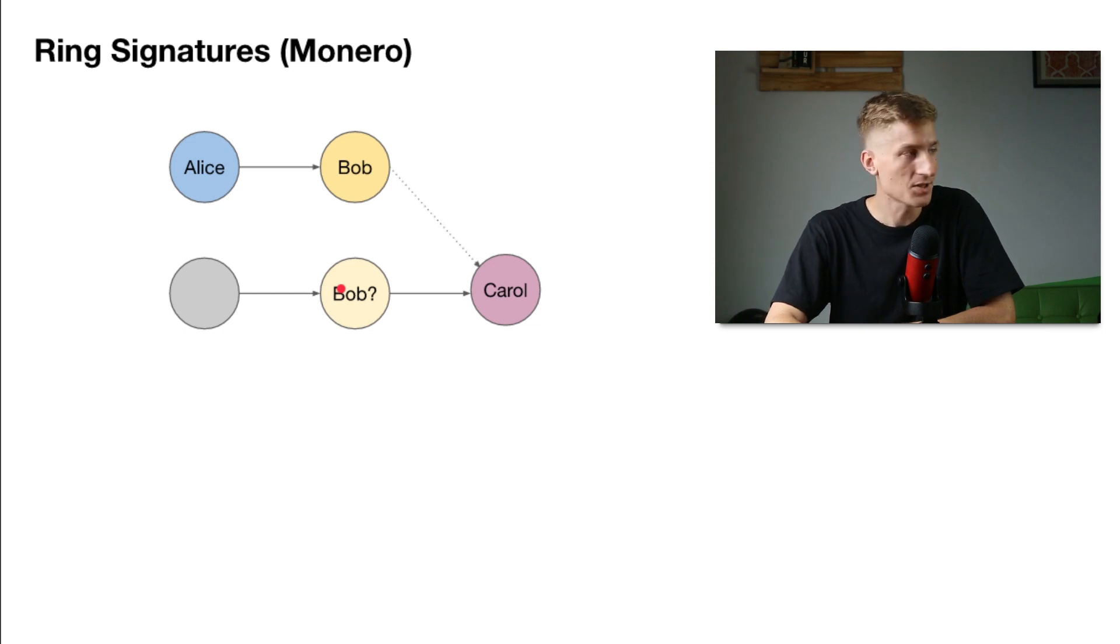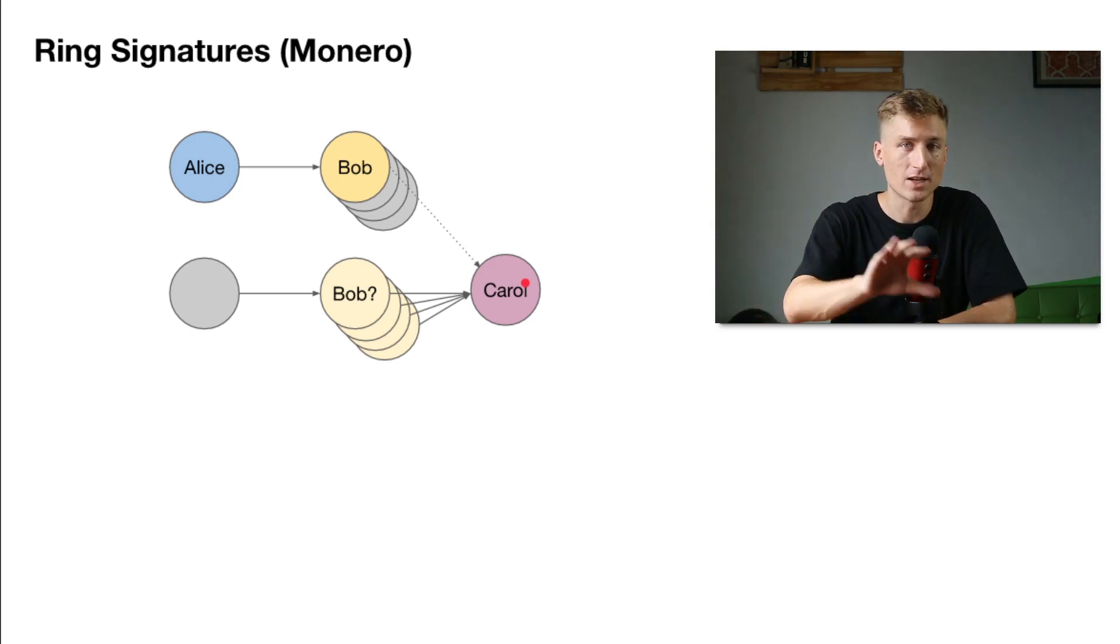The way that Monero deals with this is with a ring signature. Bob combines his inputs with a group of decoy inputs, so that Carol is not sure which input is actually his, and Alice is not really sure who is paying Carol, if it's Bob or if it's someone else. We're going to think about Bob's anonymity set. If it's not Bob, who could it be? Who's paying Carol? From Alice's perspective, how many different people could be paying Carol? The first limiting factor is the size of the ring. Monero sets their minimum ring size to 11, so that means Bob is 1 out of 11. So his anonymity set is 11.